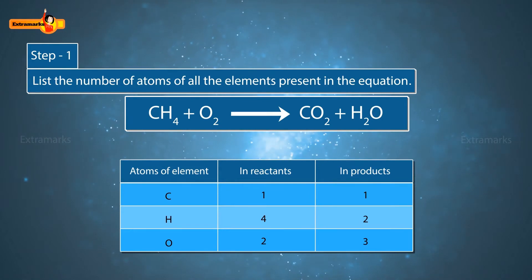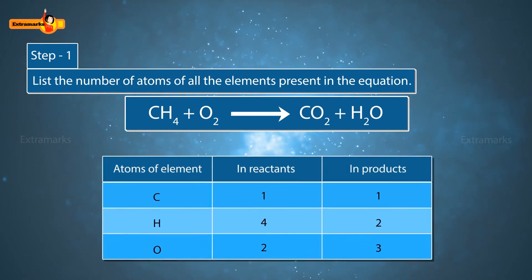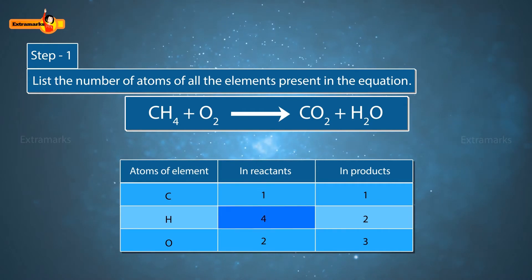Count the atoms on both the sides and write them in a table. There are 1 carbon, 4 hydrogen and 2 oxygen atoms on the reactant side and 1 carbon, 2 hydrogen and 3 oxygen atoms on the product side.